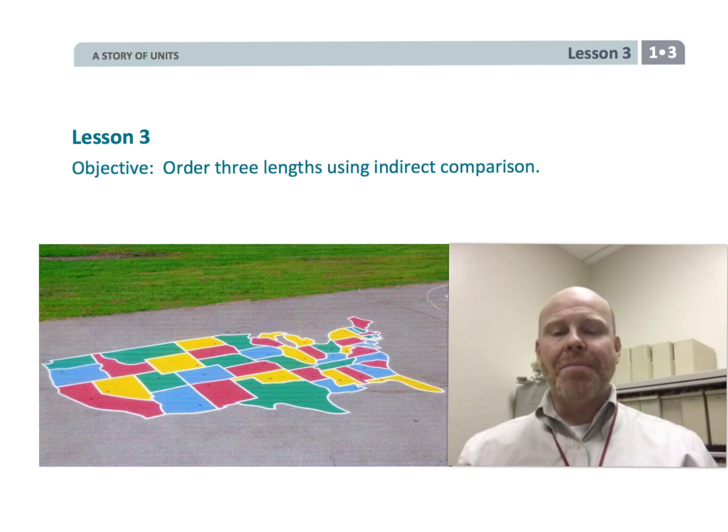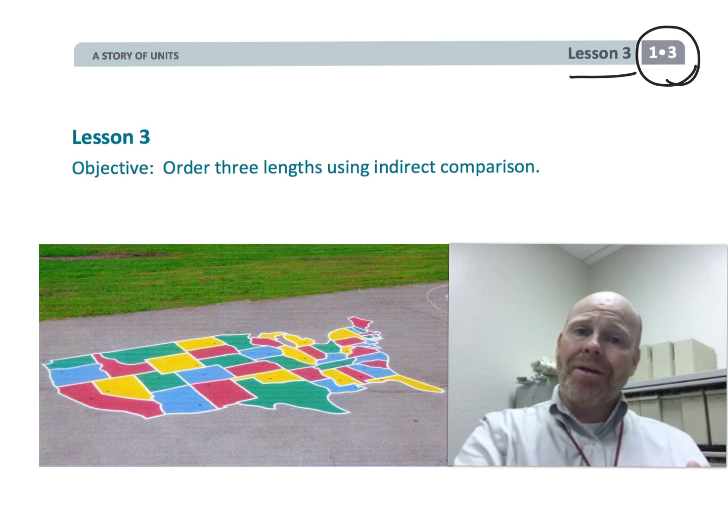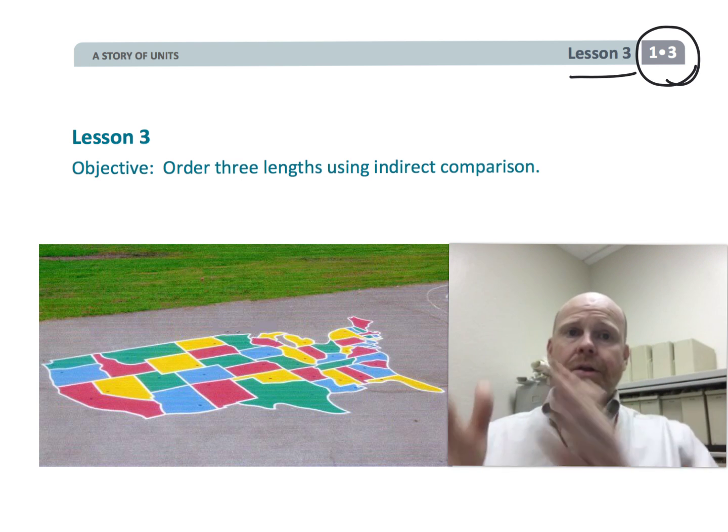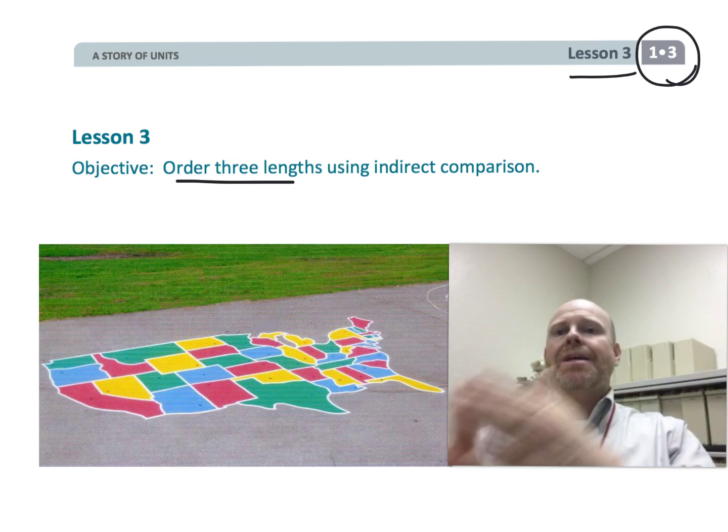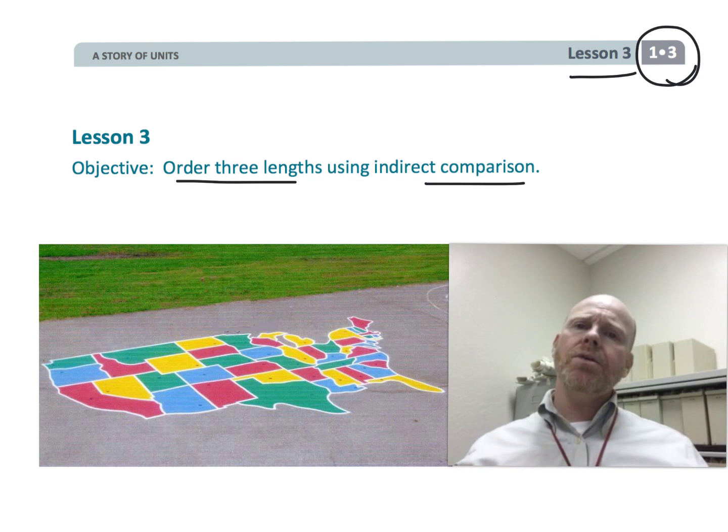This is first grade module three, lesson three. In this lesson, students are going to be comparing multiple objects and ordering them from least to greatest, shortest to tallest, or shortest to longest, using indirect measurement and indirect comparison.